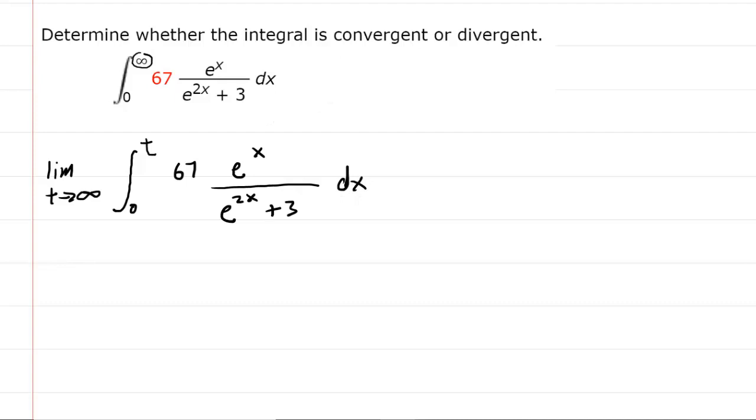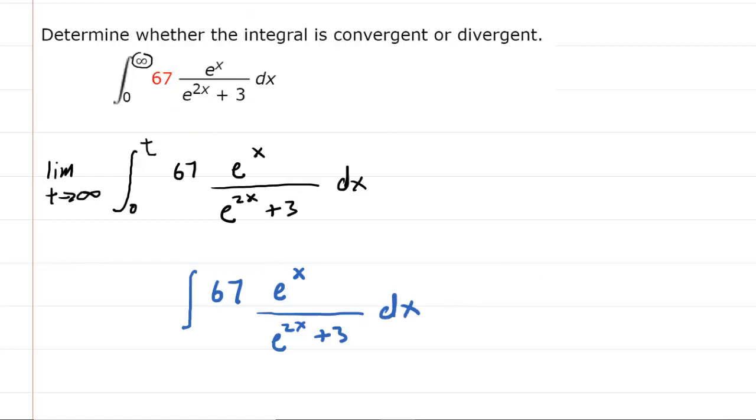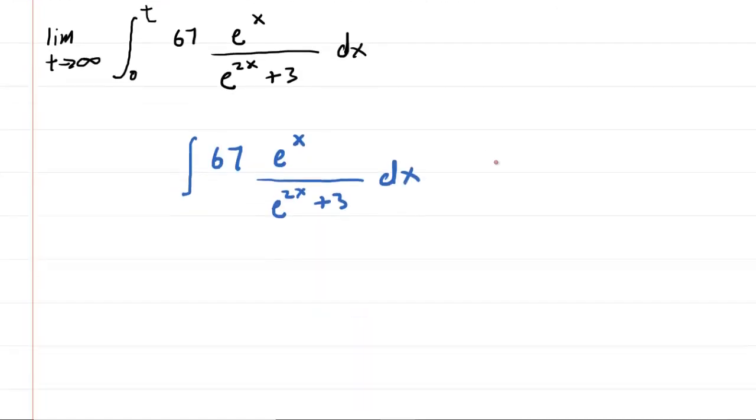The next step is to let go of the bounds temporarily and focus your attention on just evaluating the integral. We're going to step aside and try to figure out what the integral of 67 e to the x over e to the 2x plus 3 is equal to. Very often in these problems a u-substitution technique will work really well, though it's not always obvious what to let u equal.